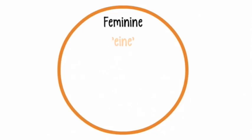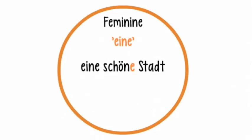In the case of the feminine form Eine, we have the example of Eine schöne Stadt, meaning 'a beautiful city.' Here the adjective schön changes the ending to schöne: Eine schöne Stadt.